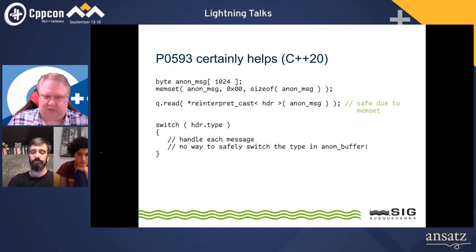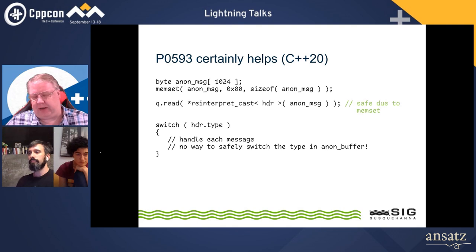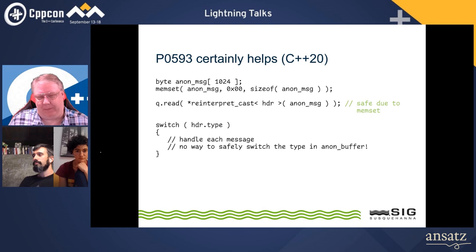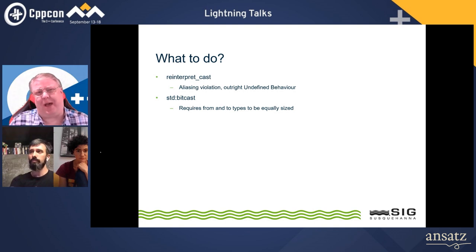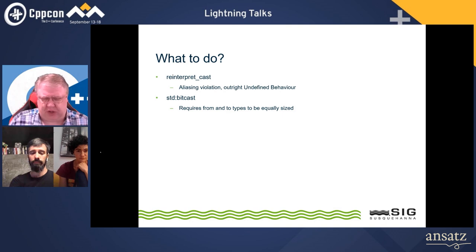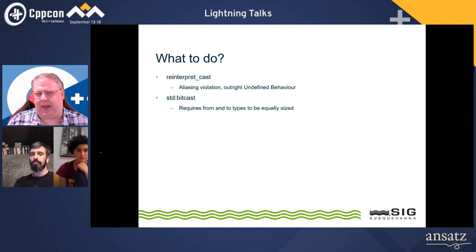The problem is, as soon as we try to make sense from that header type and go to a different type for the message — all bets are off. We're back in pointer aliasing and undefined behavior land. We could reinterpret cast from the known size of the header into the rest of the buffer, but now we have to know how far into the buffer to go, and it's fraught. So reinterpret cast on its own means aliasing and undefined behavior.